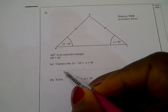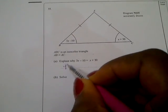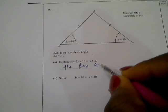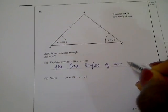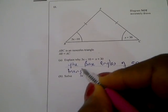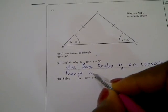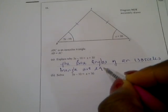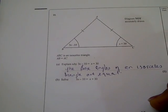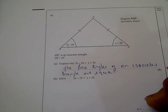The reason is because the base angles of an isosceles triangle are equal. So that's the reason. That's it for 11a.